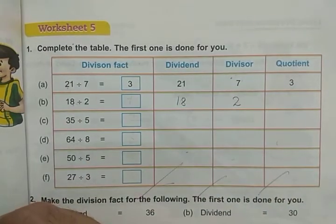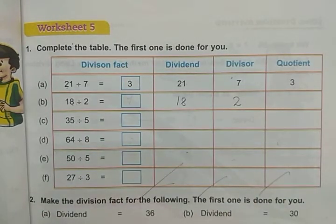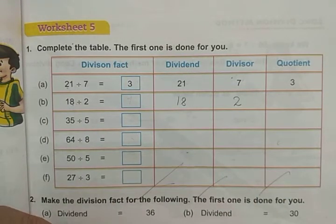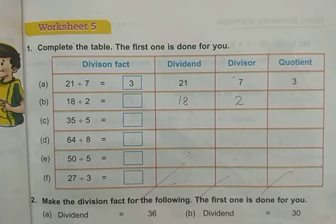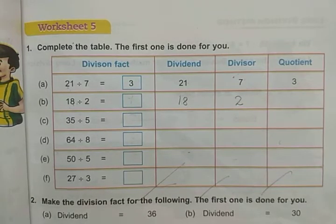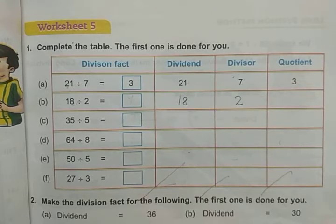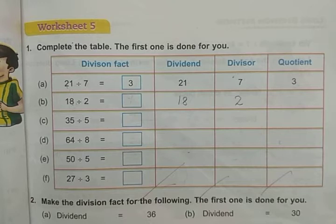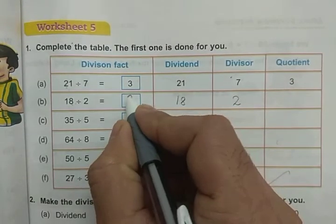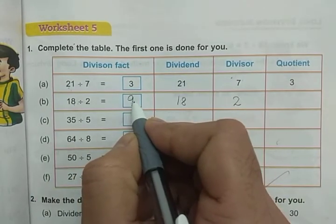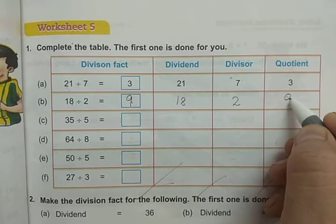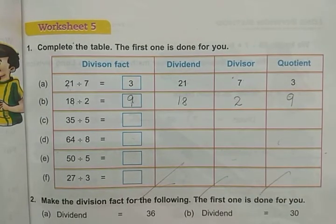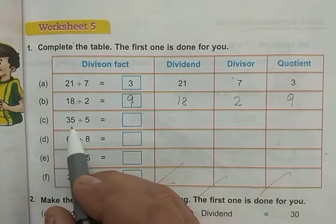Now let us divide by using the multiplication table — recite the table of 2 until 18. 2 ones are 2, 2 twos are 4, 2 threes are 6, 2 fours are 8, 2 fives are 10, 2 sixes are 12, 2 sevens are 14, 2 eights are 16, and 2 nines are 18. So the result is 9, which is our quotient.